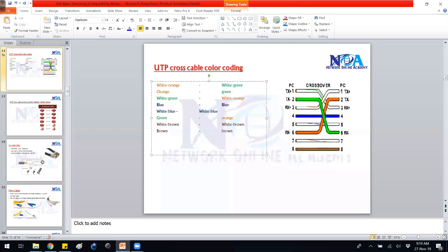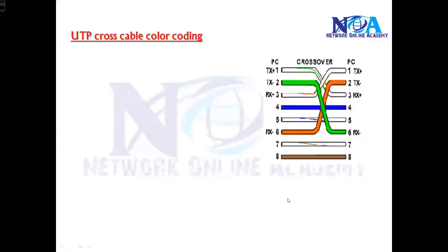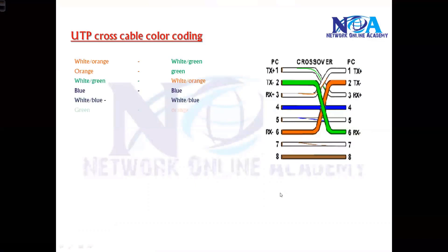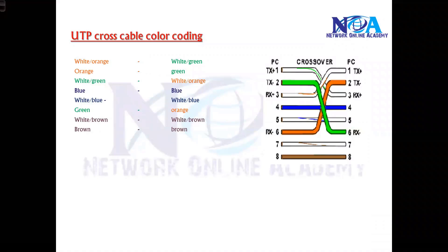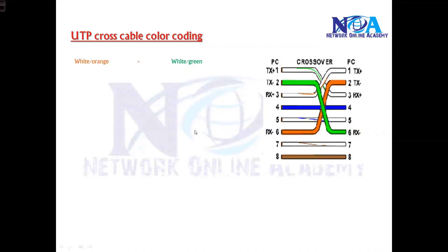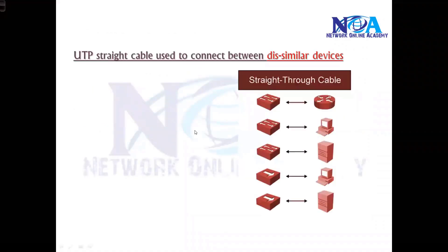It's all about color coding. The recommended order for a UTP straight cable is: white-orange, orange, white-green, blue, white-blue, green, white-brown, brown. That is the normal order for a UTP straight cable.